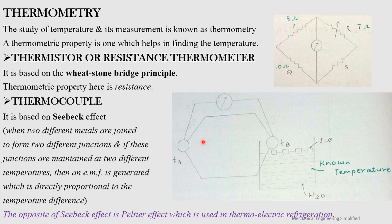The EMF generated is directly proportional to the temperature difference between the two junctions. So if one temperature is known, by measuring the EMF we can find the difference between the two temperatures and thereby determine the unknown temperature. This is the working principle of the thermocouple.